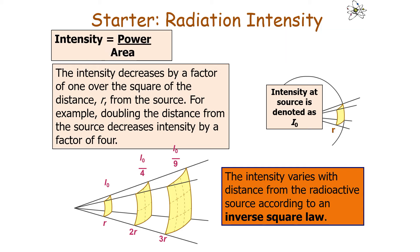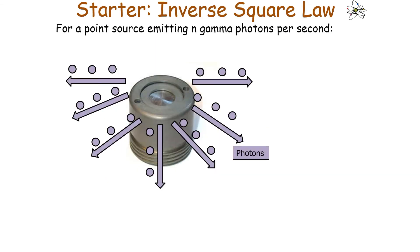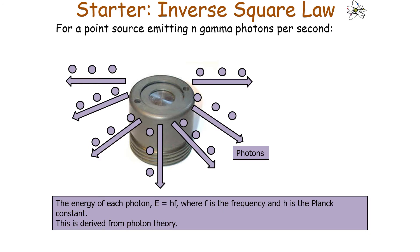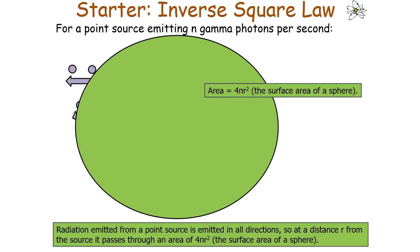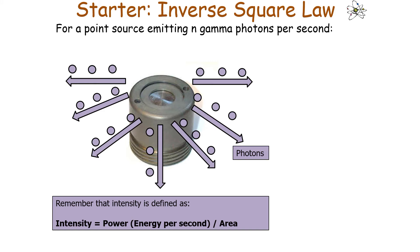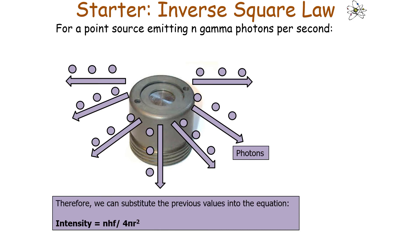Intensity could be considered as power over area. For a point source emitting N gamma photons per second, the energy of each photon is E = hf, where f is the frequency and h is the Planck constant, derived from photon theory. If there are N photons emitted per second, the total energy emitted every second is NHF. The radiation is emitted in all directions, so at distance r it passes through an area of 4πr², the surface area of the sphere of photon emission.